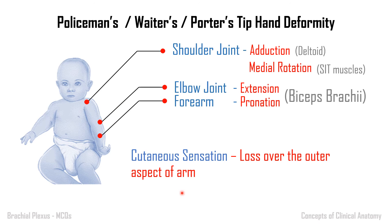Questions can be asked in multiple ways — what muscles are involved or what the actual deformity is. The highlighted positions are the deformities, while the lost movements are the opposite: if the arm is adducted, abduction is lost; if medially rotated, lateral rotation is lost; if the elbow is extended, flexion is lost; if pronated, supination is lost. You should be aware of what is lost to answer clearly.